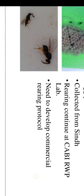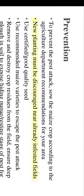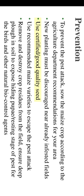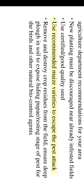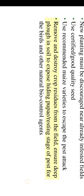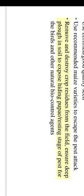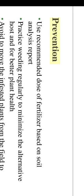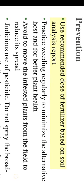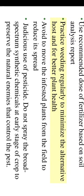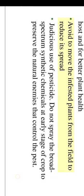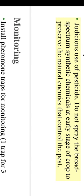Prevention: to prevent pest attack, sow the maize crop according to Agriculture Department recommendations for your area. New planting must be discouraged near already infested fields. Use certified good quality seed and recommended maize varieties to escape pest attack. Remove and destroy crop residues from the field. Ensure deep plowing of soil to expose hiding pupae. Encourage birds and other natural biocontrol agents. Use recommended dose of fertilizer based on soil analysis. Practice weeding regularly to minimize alternative hosts and for better plant health. Avoid moving infested plants from the field to reduce spread. Do not spray broad-spectrum synthetic chemicals at early crop stage to preserve natural enemies that control the pest.